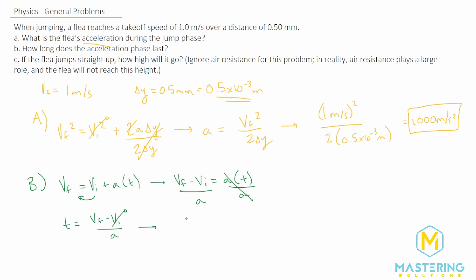So all we're left with is time equals v final divided by the acceleration. So time will be equal to the final velocity we said is 1 meter per second, divided by the acceleration that we found is 1,000 meters per second squared.